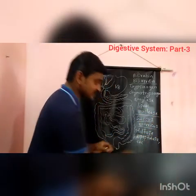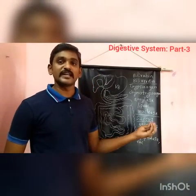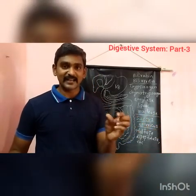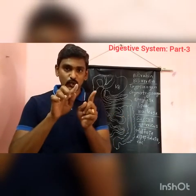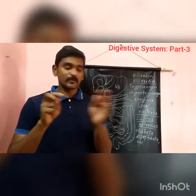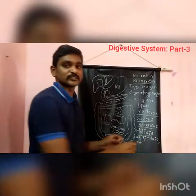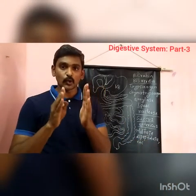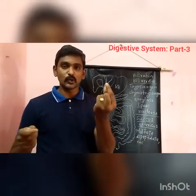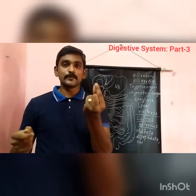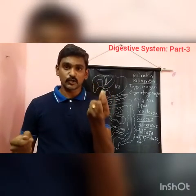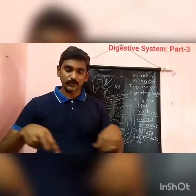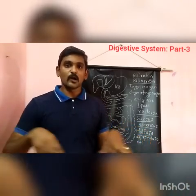Maltase acts on maltose. Maltose is a disaccharide made of two glucose units. Maltase breaks maltose down into glucose plus glucose. Glucose is a simple monosaccharide — a simple sugar — that is easily absorbed into the blood and transported to all parts of the body.